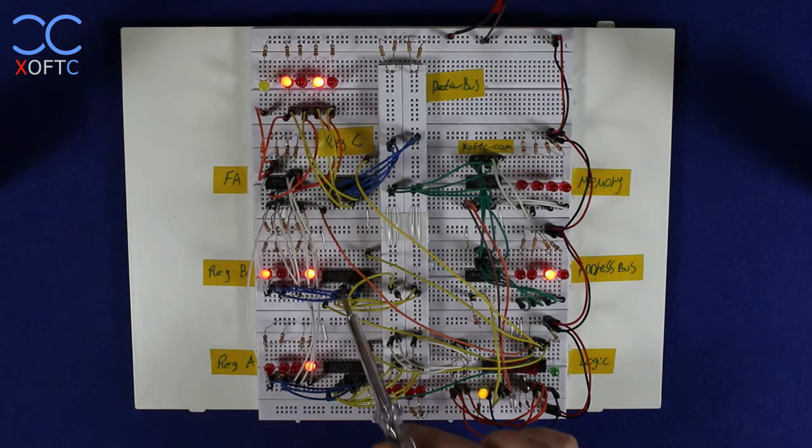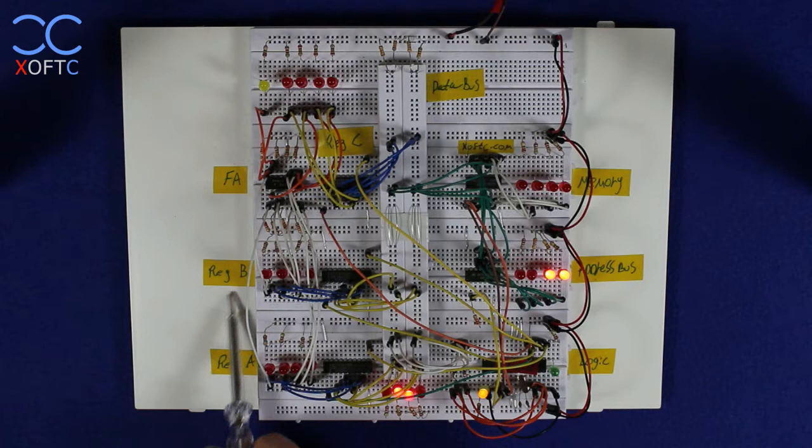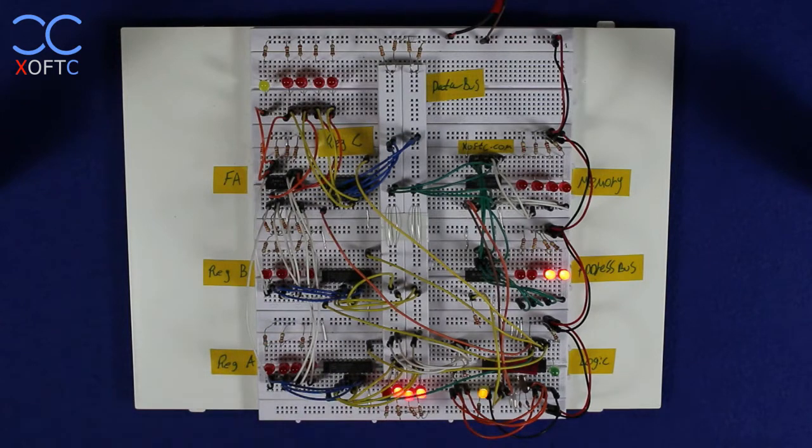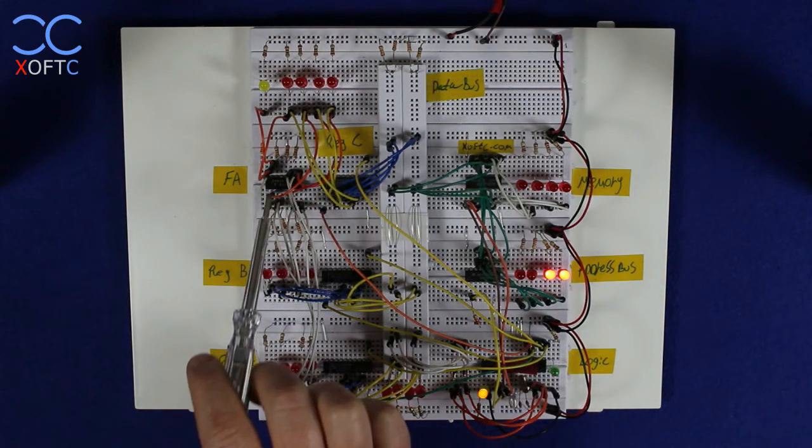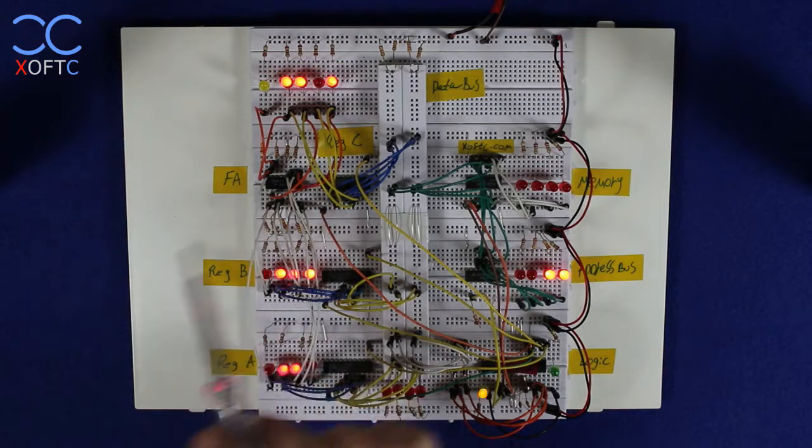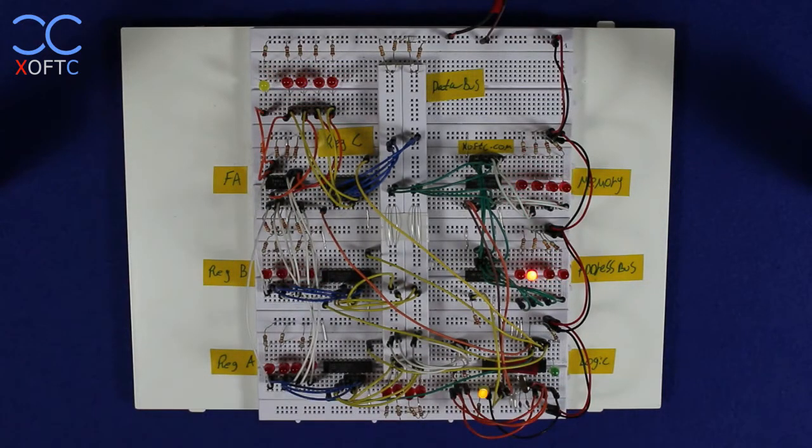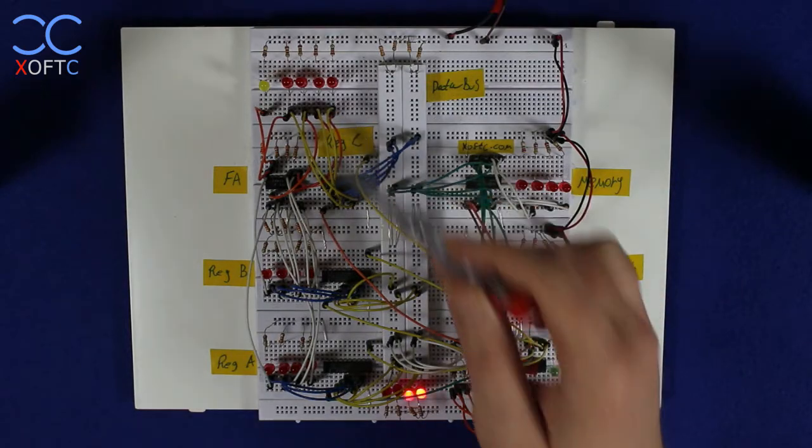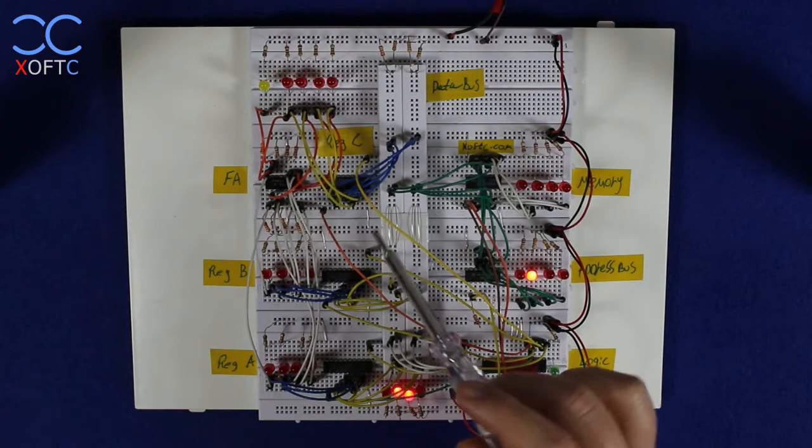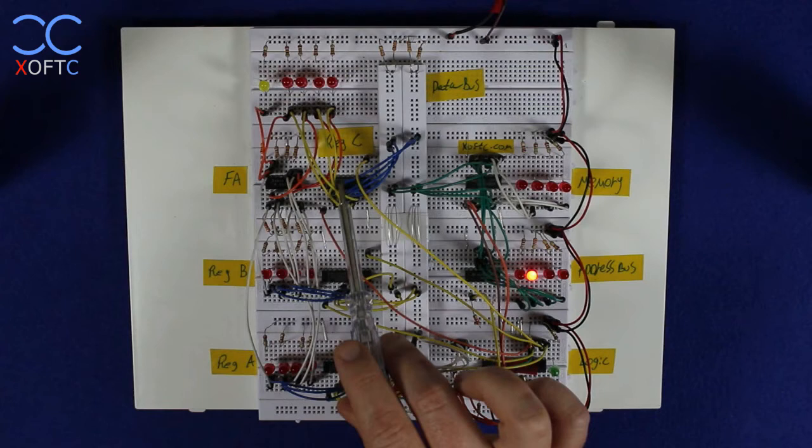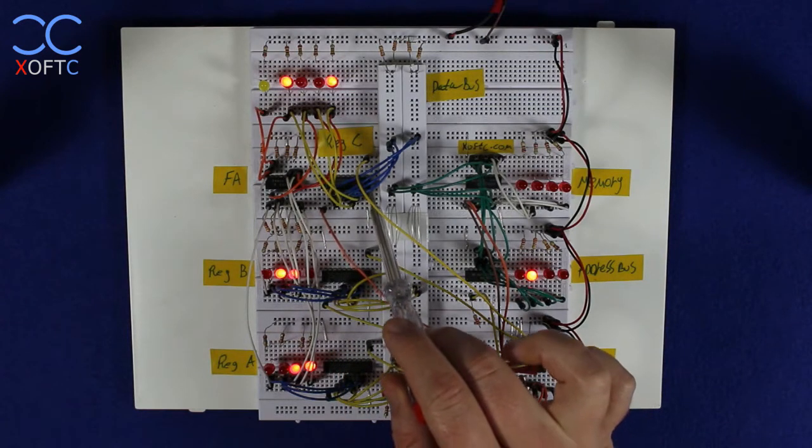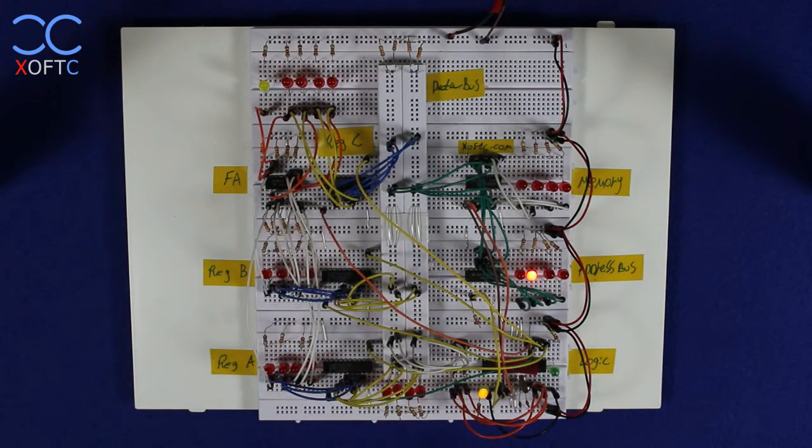We have two 8-bit transparent latches which represent register A and register B and each one of them will receive a 4-bit value. We have here a full adder that only adds value so it's going to add register A and register B. Whatever comes out of the full adder is going to go into register C which again is another 8-bit transparent latch.